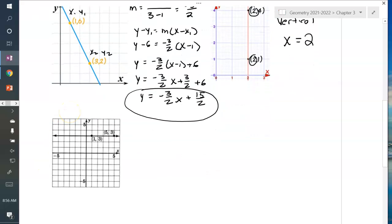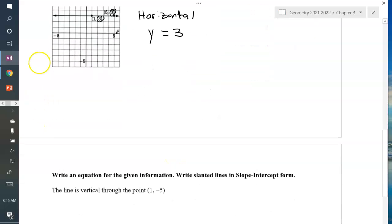This one's a horizontal line. So that's going to be in the form y equals. Look at your y-coordinates. It's 3 in both cases. So y equals 3. And that's done.